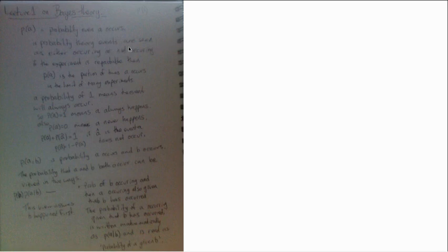In probability theory, events are either occurring or not occurring. So probabilities apply to binary events, events that either happen or they don't happen. Either occur or not occurring.